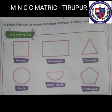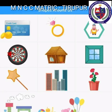Plane figure: a shape that can be drawn on a plane surface is a plane figure. Examples: square, rectangle, triangle, circle, semicircle, and pentagon. Real-life examples: square is a window, circle is a wheel, semicircle is a geometry tool called a protractor, and pentagon is the front of a house.